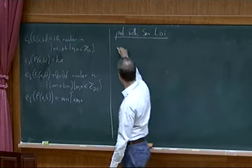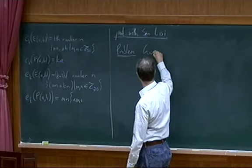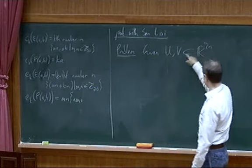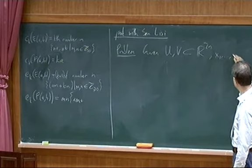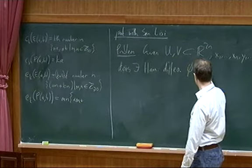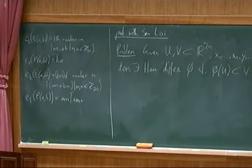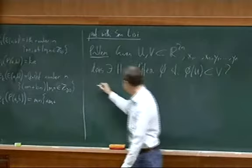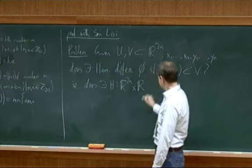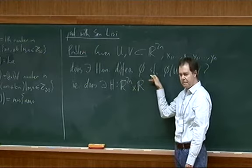I'm interested in the symplectic embedding problem. The problem in Euclidean space: given two domains in even-dimensional Euclidean space, using coordinates x₁, ..., xₙ, y₁, ..., yₙ, does there exist a Hamiltonian diffeomorphism φ taking one set into the other? I'll always look at time-dependent Hamiltonian functions, compared to Ursa's talk.